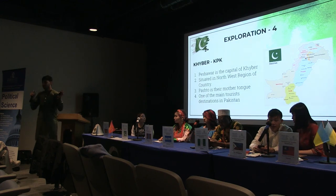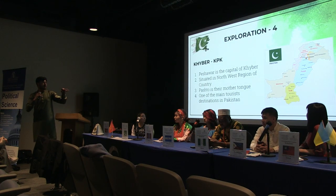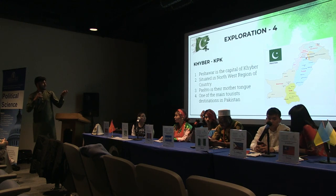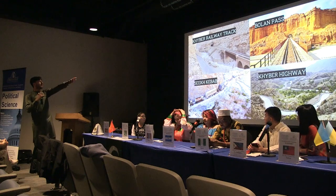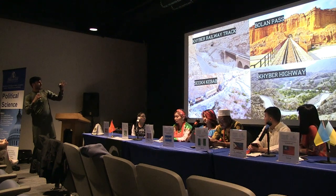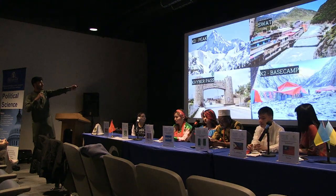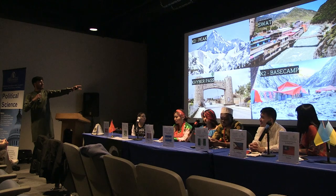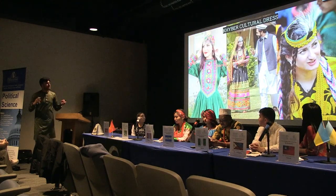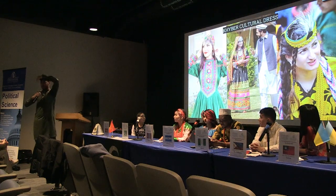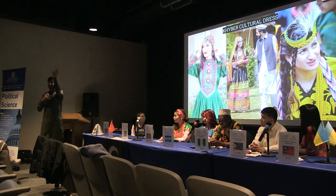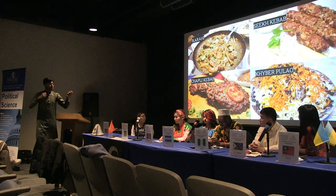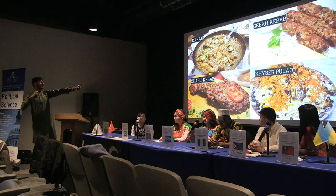The fourth province is Khyber Pakhtunkhwa, with Peshawar as its capital, situated in the northwest of the country. Pashto is their mother tongue. It is one of the main tourist destinations, mostly a hilly and mountainous area. Major tourist spots include Swat, K2, K2 Base Camp, and the Khyber Pass. The cultural dress is Shalwar Kameez with a cap, and females wear heavily embroidered dresses. They have two major types of caps — one covered with chains and another with a feather. Their traditional food includes Karahi, seekh kebab, chapli kebab, and pulao.